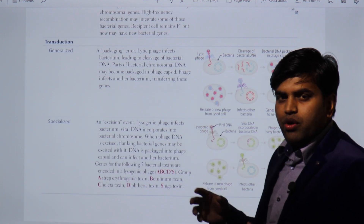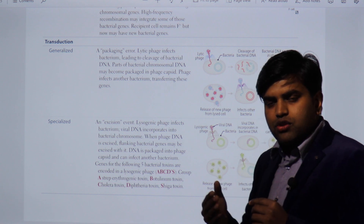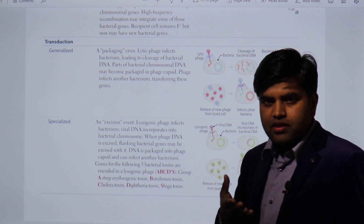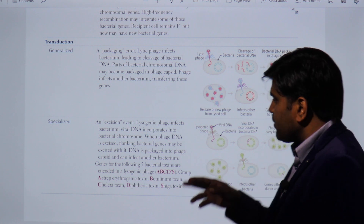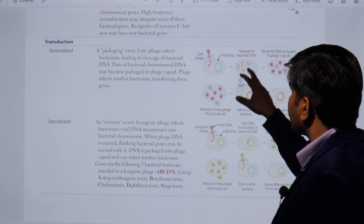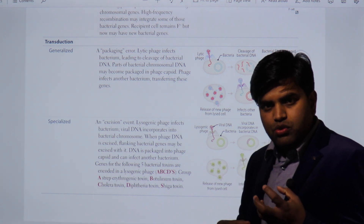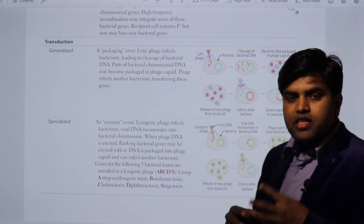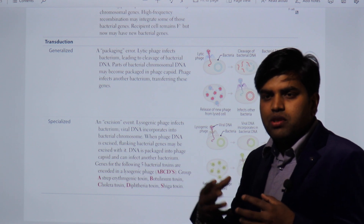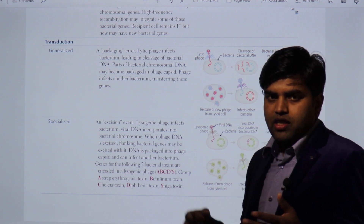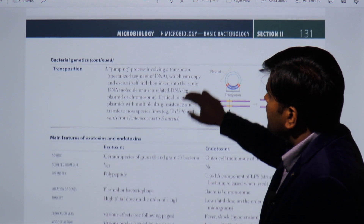Then there is transduction. This is the way by which a virus — a bacteriophage — kills the bacterium. Although viruses are smaller than bacteria, they can still kill them. In the process of killing, the virus attacks the bacterium, the bacterial chromosome gets disintegrated, and when new viruses form, they pick up some of the bacterial genetic material. This genetic material is then transferred into a new bacterium — that is transduction.